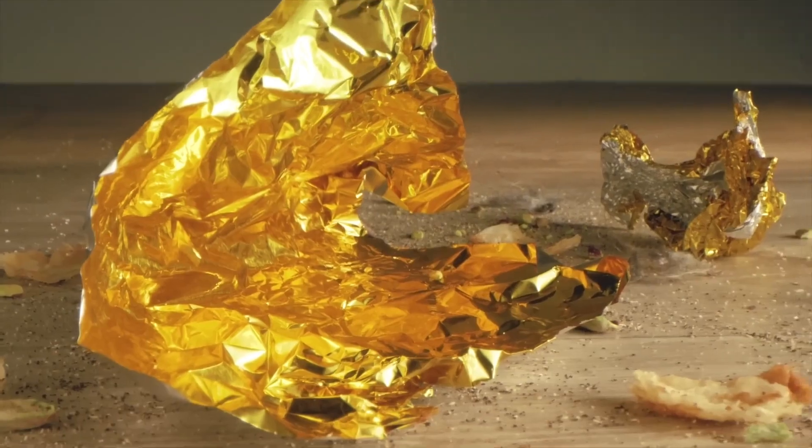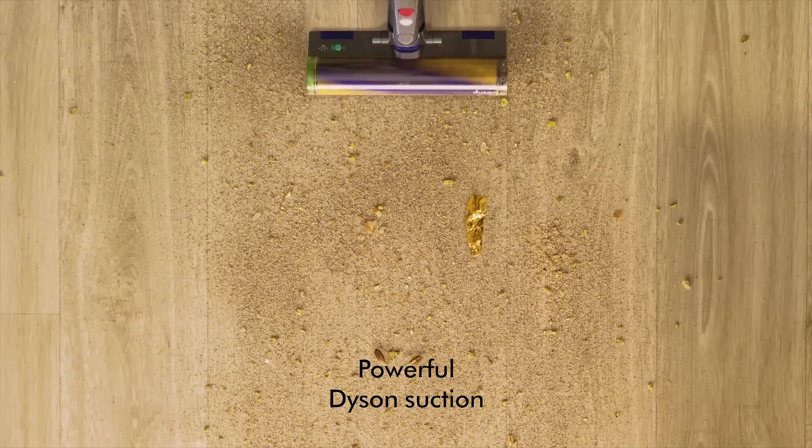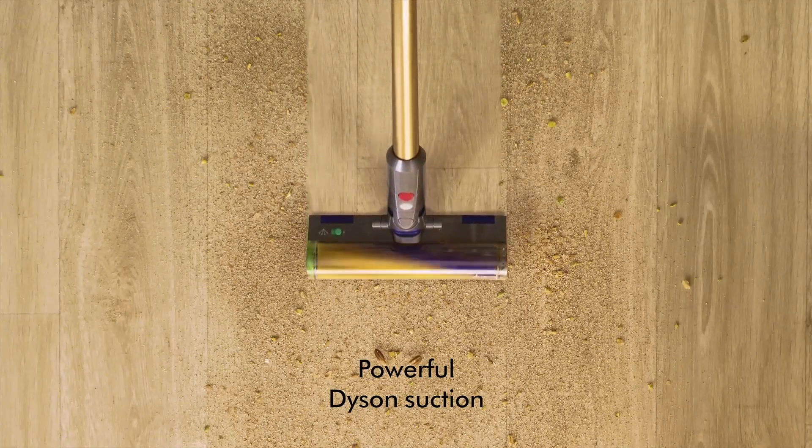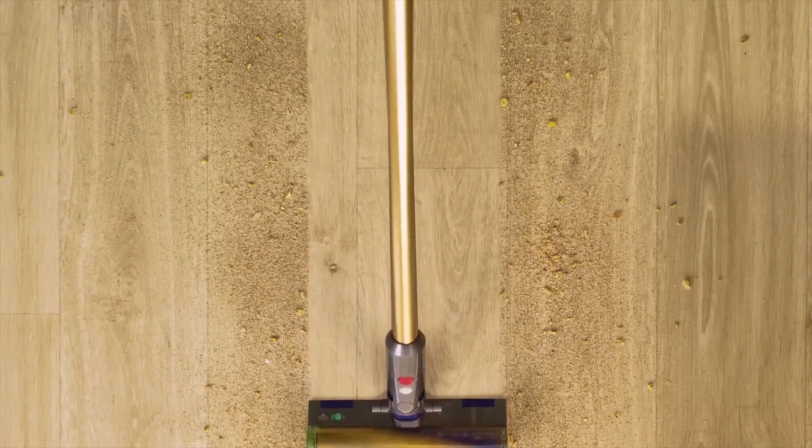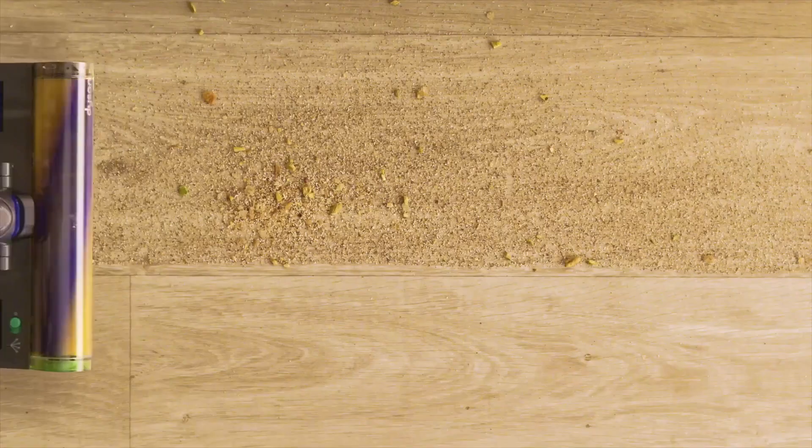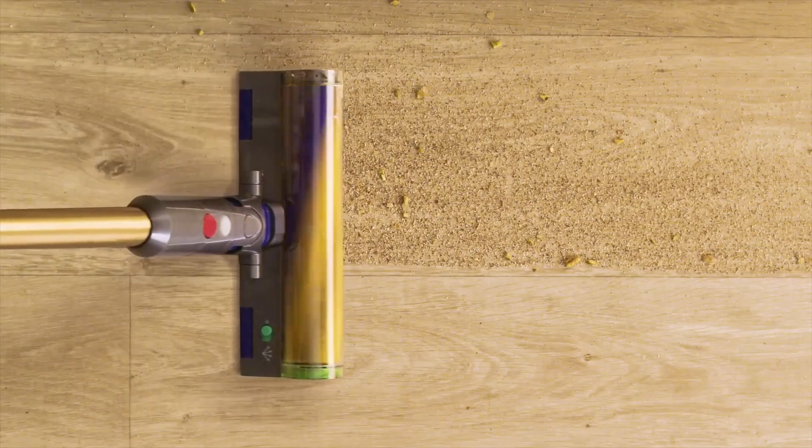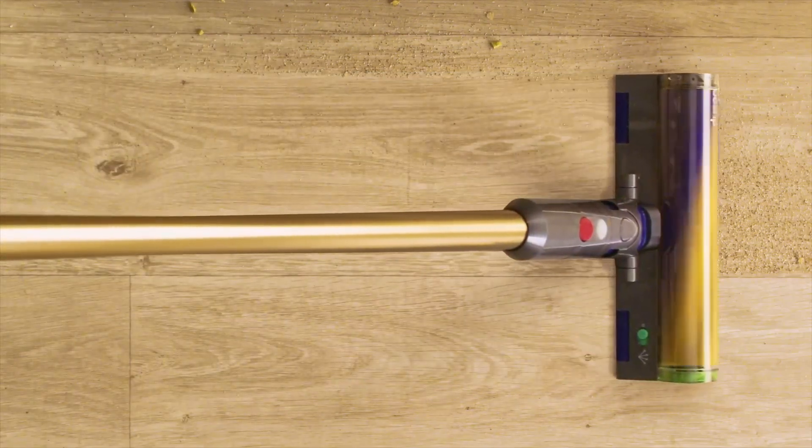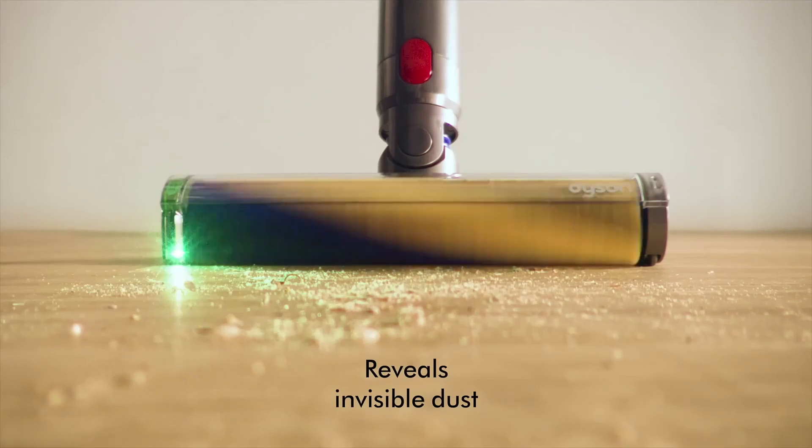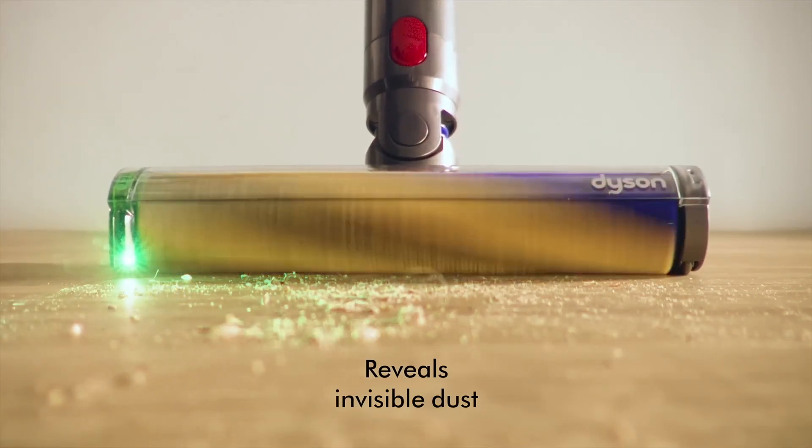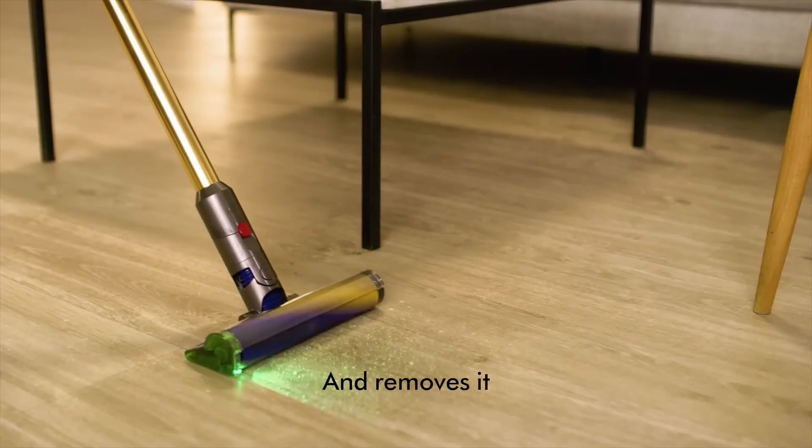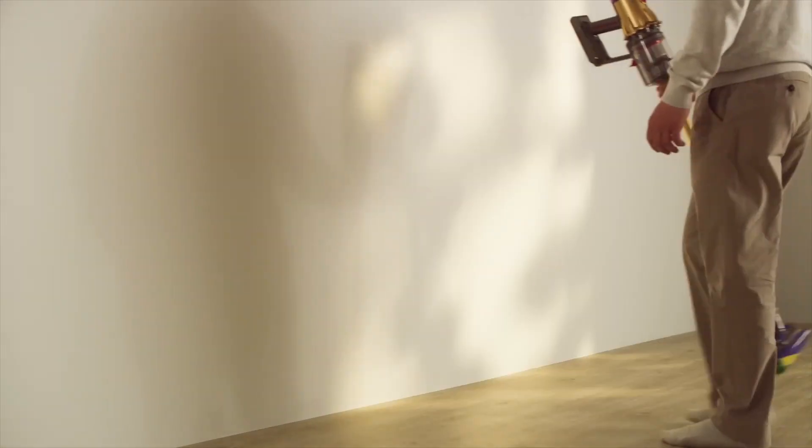Another notable feature of the Dyson V12 Detect Slim is its lightweight and versatile design. Weighing just 2.2 kilos, it is easy to maneuver around the house, and its flexible wand allows users to reach high corners and tight spaces with ease. The vacuum comes with a variety of attachments, including a motorized brush bar, a crevice tool, and a combination tool, making it adaptable for different cleaning tasks, from upholstery to stairs.